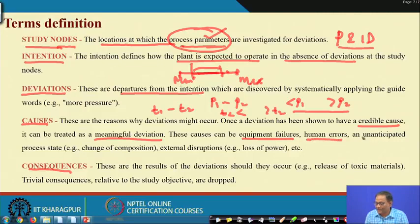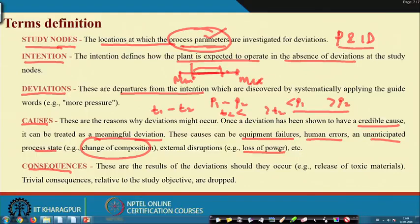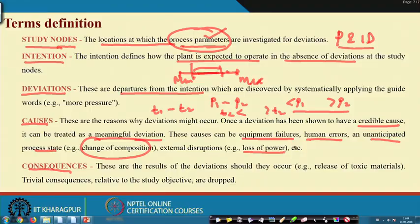There can be many trivial deviations and many significant deviations. Some deviations will require intensive causal analysis and many credible causes will be identified, and those deviations will be treated as meaningful deviations. Causes can be equipment failure, human error, an unanticipated process state like change of composition, or external disruptions. If over-pressure is the deviation, the immediate cause is pump overrun; digging further, the pump is allowed to run more than the design time because the timer does not work or the operator could not remove the switch.